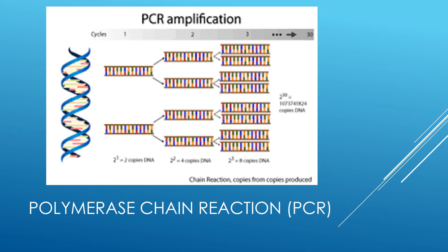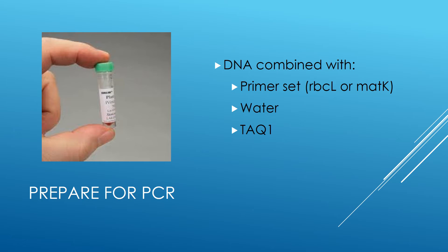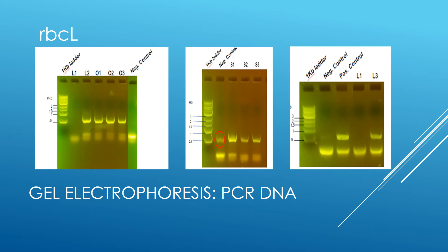PCR made many copies of the target sequence to be used for sequencing. Two different PCRs were run, one for RBCL and one for MATK, so two sets of samples had to be prepared. DNA from each sample was combined with its corresponding primer set, either RBCL or MATK. After being amplified, the samples were run through another gel electrophoresis to check that the primer sets had properly annealed to the DNA, meaning the primer sequences were able to bind to the DNA sequences to be copied. If the RBCL primer set was successful, a bright band would appear around 0.6 kilobases, as well as an additional band lower on the gel, which is primer dimer, or leftover primer that did not anneal to the DNA.